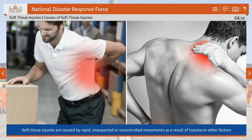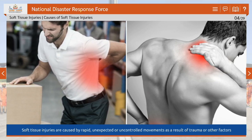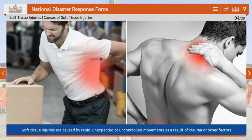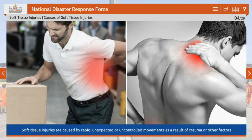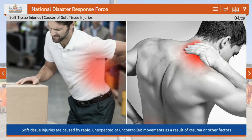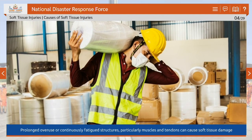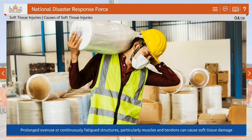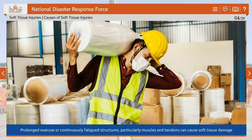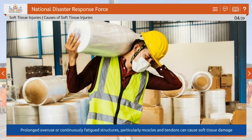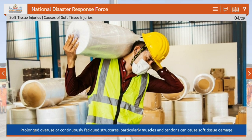The majority of soft tissue injuries are caused by rapid, unexpected or uncontrolled movements as a result of trauma or other factors. However, prolonged overuse or continuously fatigued structures, particularly muscles and tendons, can also cause soft tissue damage.